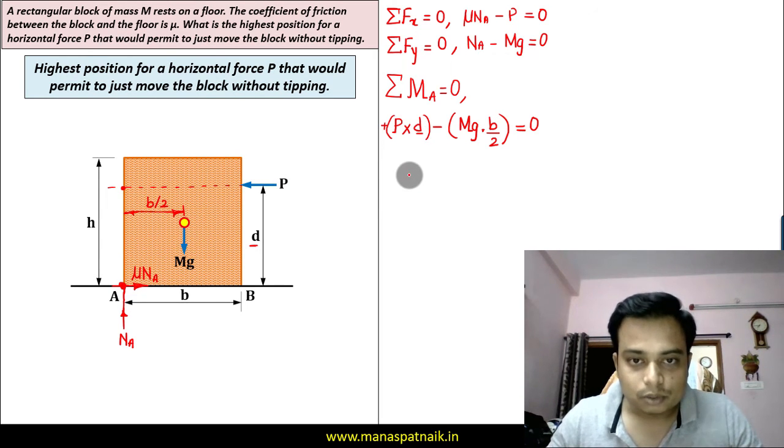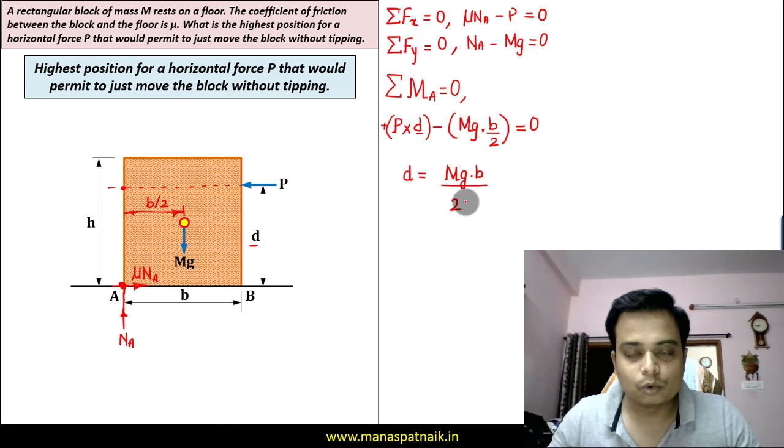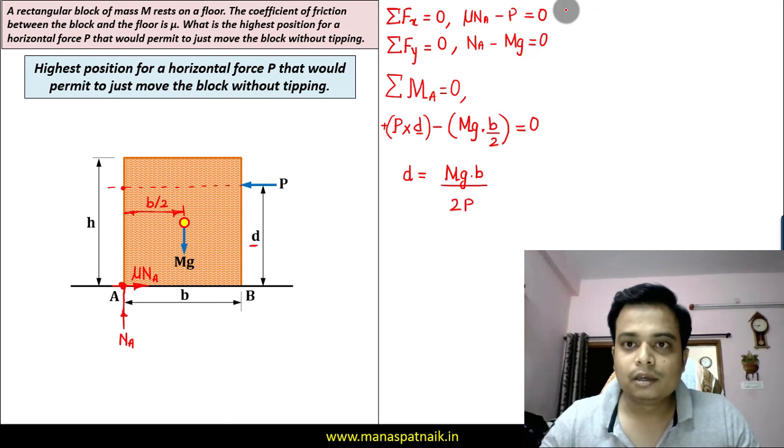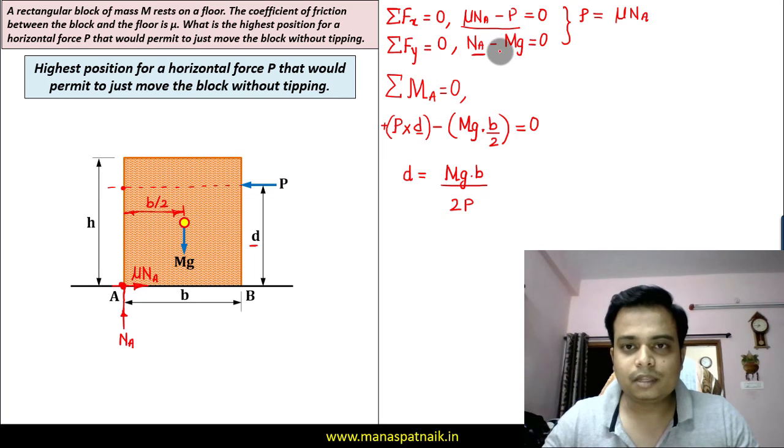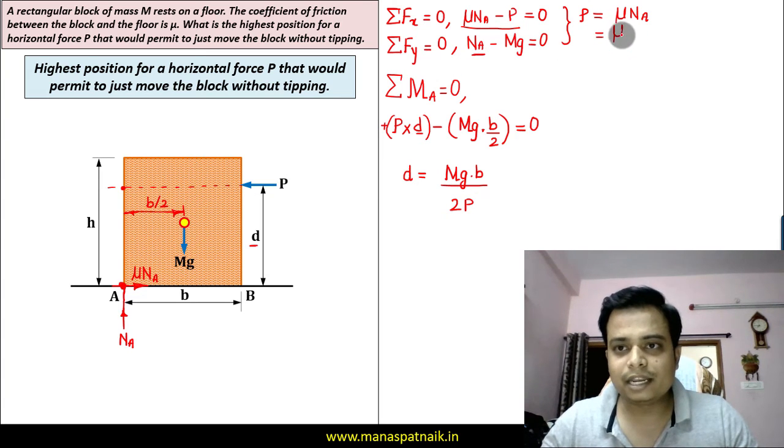So let me write this: D is equal to MGB over 2P. Well that's it. From this equation you can clearly see that from here, P is equal to μN_A. μN_A, well that's right. And N_A is equal to mg.